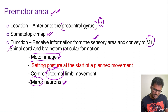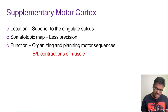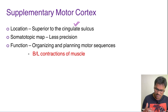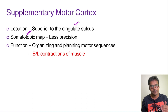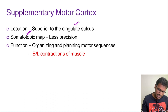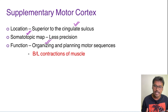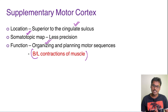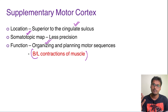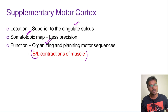Coming to the supplementary motor area, it is located superior to the cingulate sulcus and has a somatotopic map, though it is less precise than those of the primary or premotor areas. Its function is to help organize and plan motor sequences, and it also helps in bilateral contractions of the muscles — for example, grasping actions that require both sides of the body, like climbing trees.